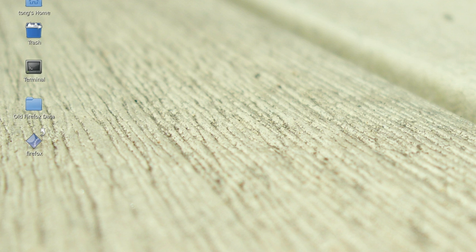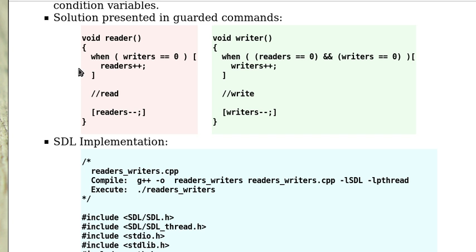Now let's review the reader-writers problem. A reader can read only if the number of writers is 0. Then you can increment the readers variable and read. On the other hand, a writer can write only if there's no reader and there's no writer. If this is true, then you can increment the number of writers and write.